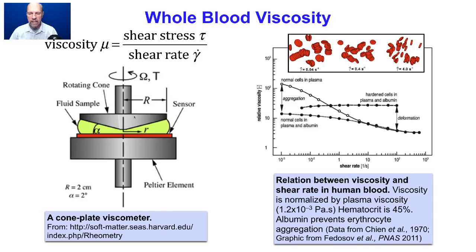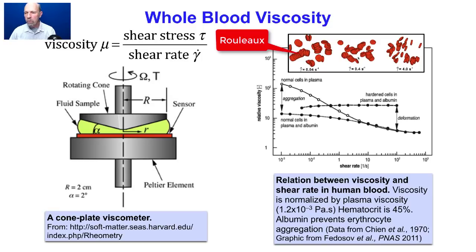In whole blood the viscosity isn't constant. We see the viscosity measured on a log scale relative to that of plasma as a function of shear rate. As blood flows faster and the shear rate is higher, the apparent viscosity falls by over tenfold. The reason is that at low shear rates, the blood cells aggregate into rouleaux, and as blood starts to flow, the rouleaux break up and viscosity decreases. When albumin is added, causing cells not to aggregate, the viscosity is lower and changes less with shear rate. But at high shear rates, both solutions still show decreasing apparent viscosity.